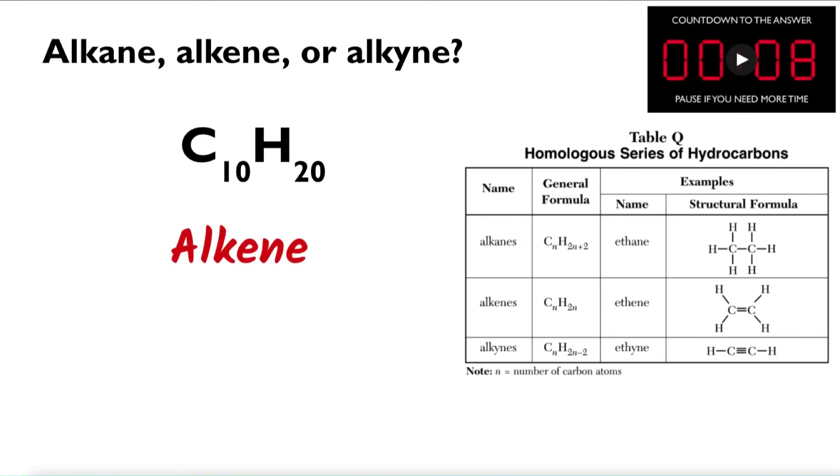So this would be an alkene because if we look at the general formula, CnH2n, that essentially means multiply the number of carbon atoms by two, that's just going to give you the number of hydrogen atoms. And that's exactly what's happening in this chemical formula. 10 times 2 is 20. C10H20. So this must be an alkene.